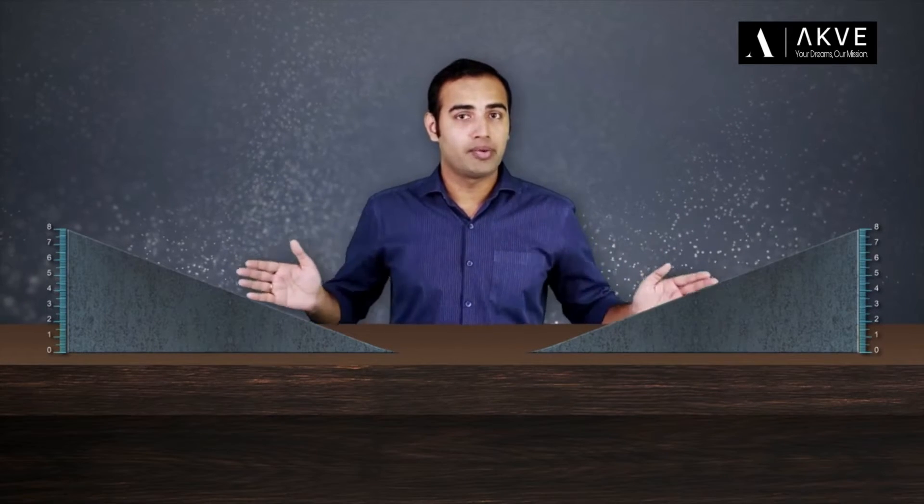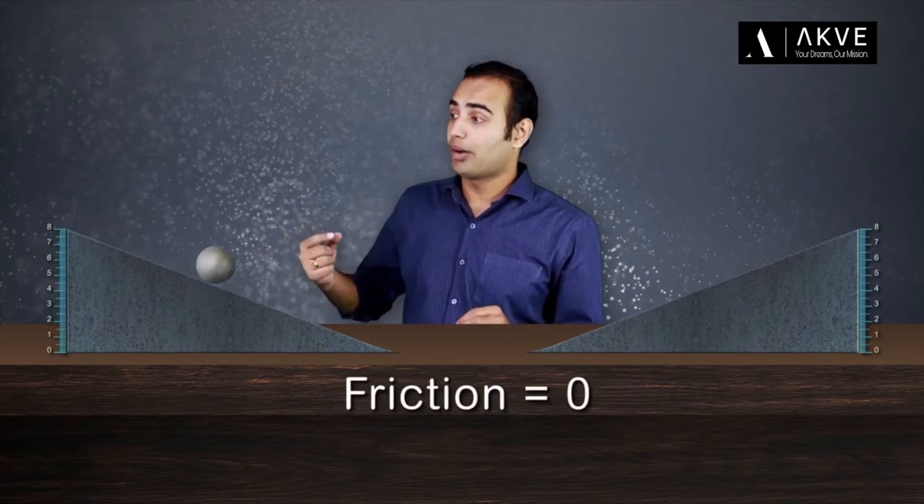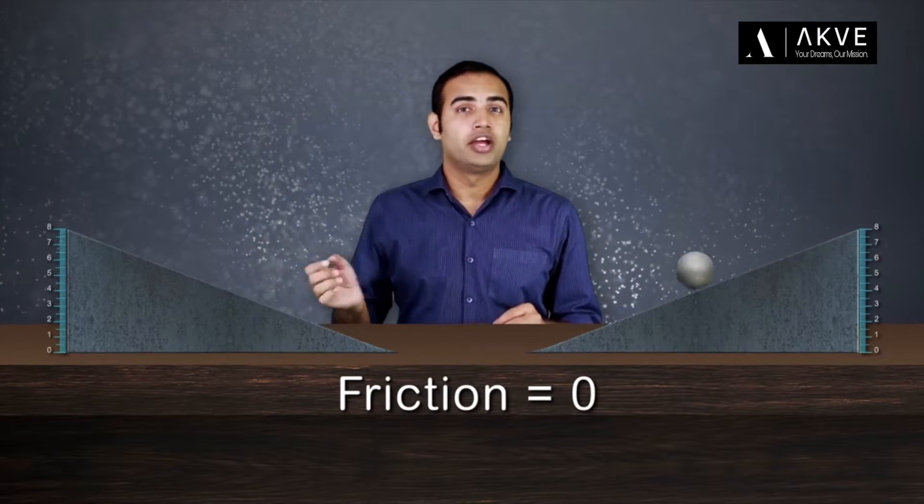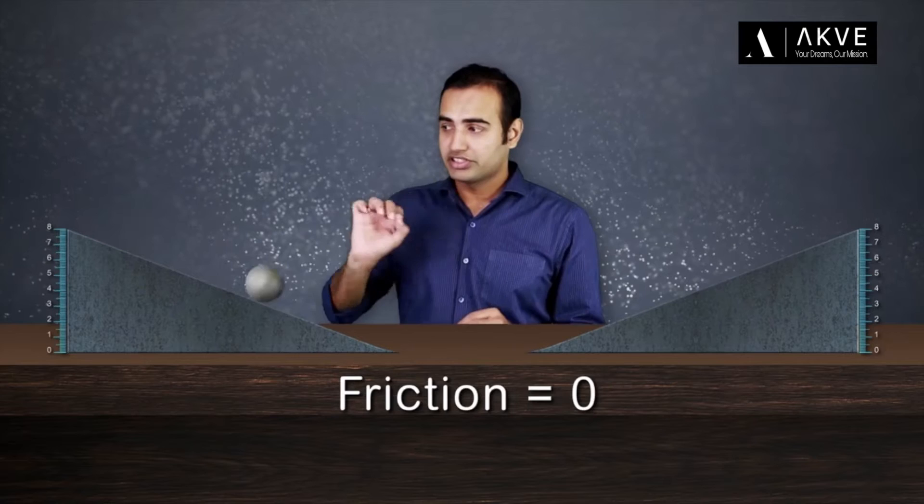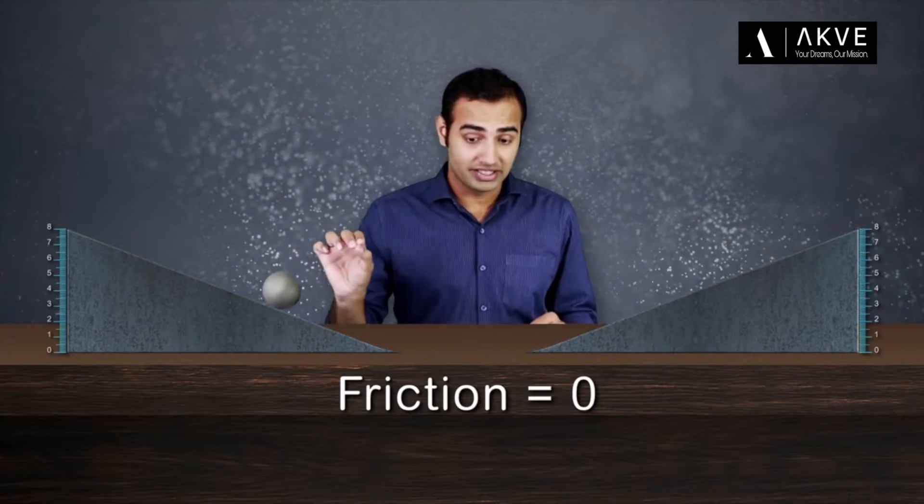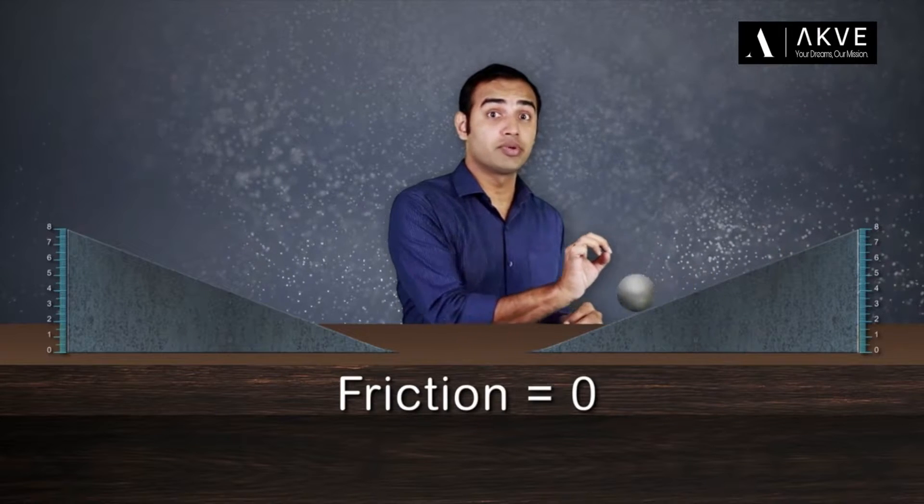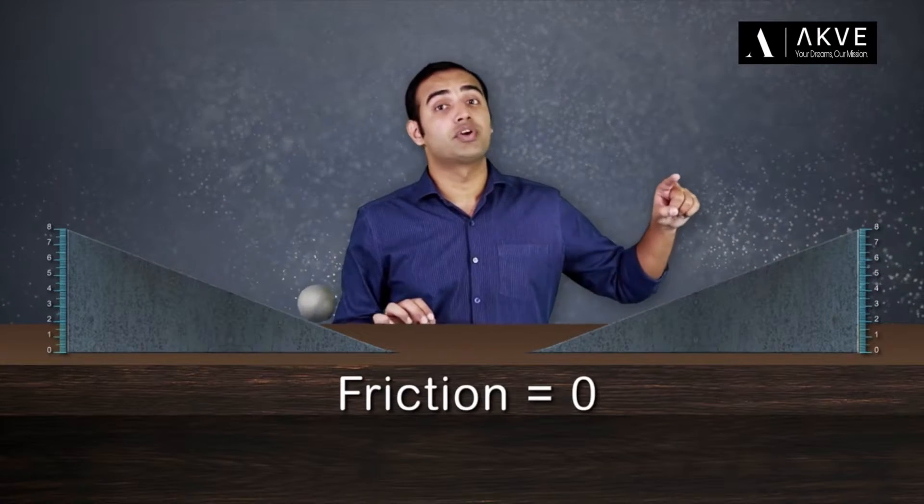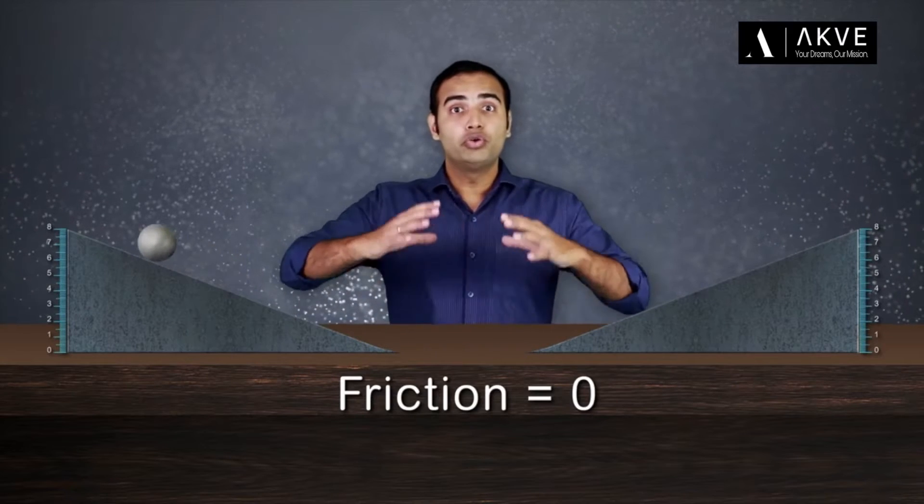Galileo proved this using a series of experiments. In one of his experiments, Galileo considered two smooth inclined planes, placed them apart on a smooth table and decided to drop a ball from the top of one of the inclined planes. What he observed was that the ball's speed increased while coming down the first inclined plane, the ball's speed stayed constant while moving on the smooth table, and the ball's speed decreased while moving up the second inclined plane.